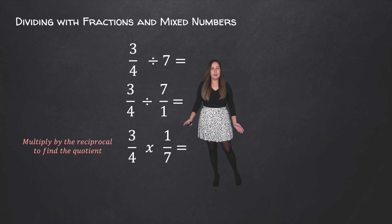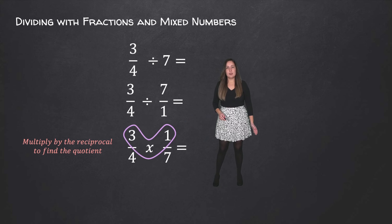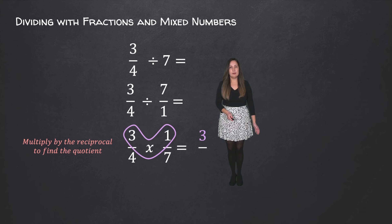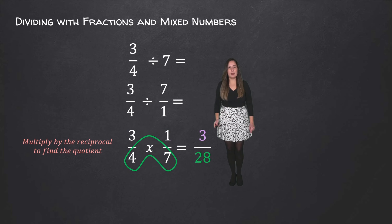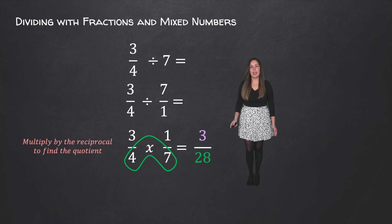Now we just multiply normally. So 3 times 1 is equal to 3, and then we're going to multiply our denominators. 4 times 7 is equal to 28, and that's it.